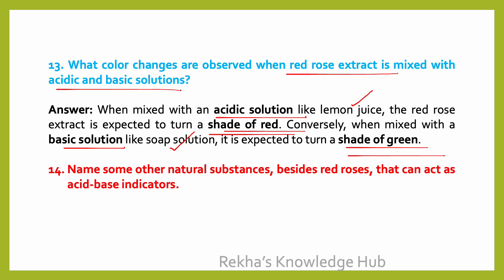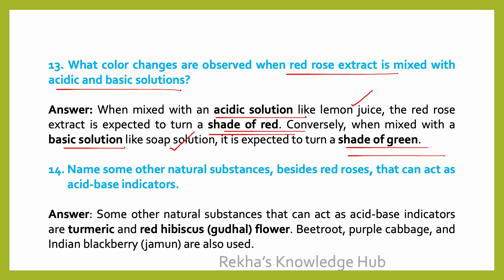Name some other natural substances besides red roses that can act as acid-base indicators. Some natural substances that can act as acid-base indicators are turmeric, red hibiscus or guldal flower, beetroot, purple cabbage, and Indian blackberry or jamun.